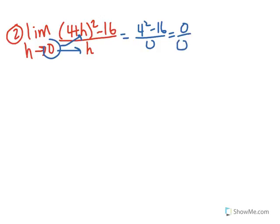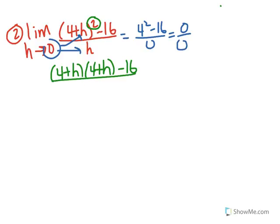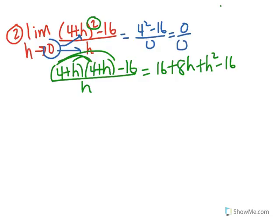So then you try option 2. There's nothing to factor, but you can try foiling because of this squared. So I'm going to multiply 4 plus h times 4 plus h. You do 16, and then you get 4h and another 4h, or 8h, and then plus h squared when you foil the last part out.